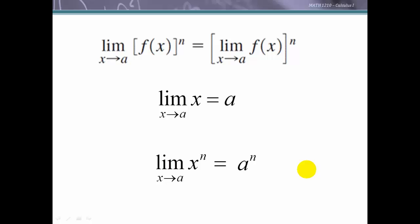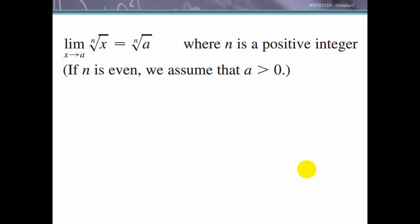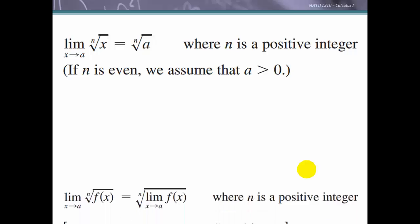This helps when we're finding limits of polynomials, since polynomials consist of x^n terms possibly with constants in front and summed together. We can take the limit of each term and then add or subtract them, applying the constant multiple rule as needed. This also extends to nth roots: the limit as x approaches a of the nth root of x is the nth root of a, assuming a > 0 when n is even.